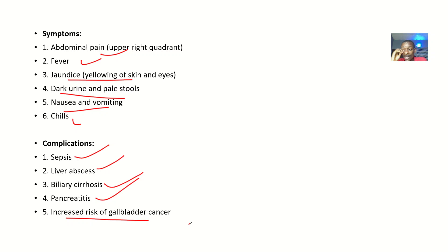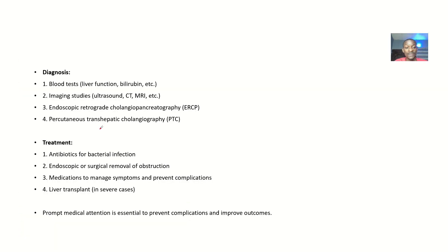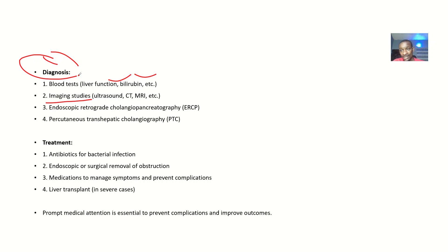For diagnosis, the bile ducts and gallbladder are buried deep in the abdomen, so if you want to know something is wrong inside, you'll want to do some imaging studies. You could do blood tests like liver function tests and bilirubin. Imaging studies use machines to see what is happening inside without invading the person — ultrasound, CT scan, MRI scan. They could also do endoscopic retrograde cholangiopancreatography (ERCP) or percutaneous transhepatic cholangiography (PTC).